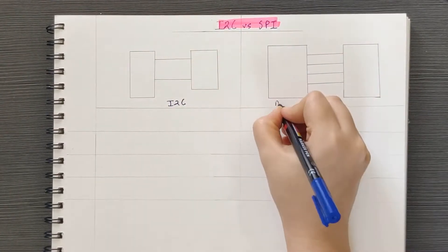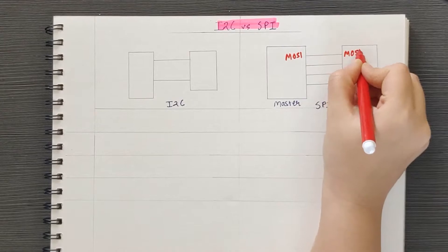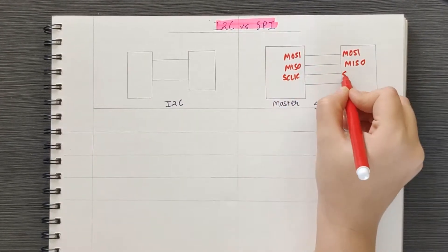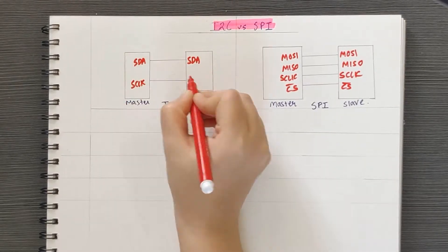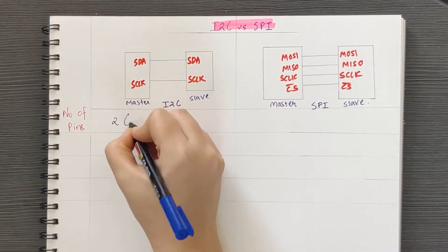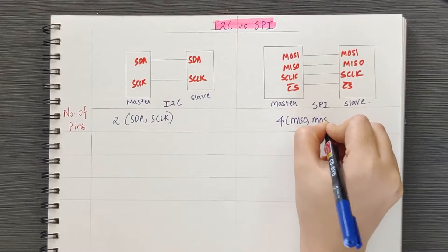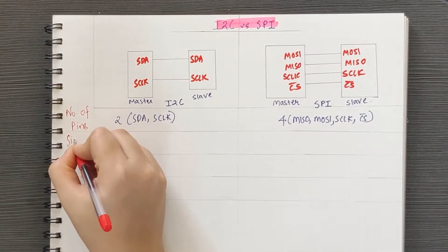The first very obvious difference is in the number of pins. In SPI, we have four pins: MOSI, MISO, SCLK, and CS. In case of I2C, there are only two pins: SDA and SCLK. That's the first difference.